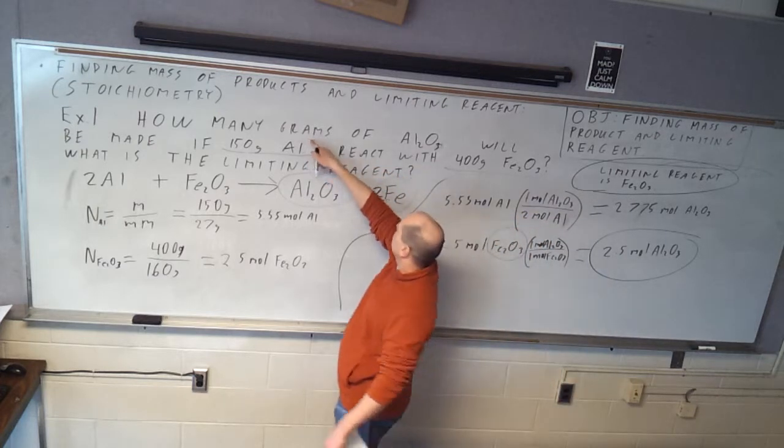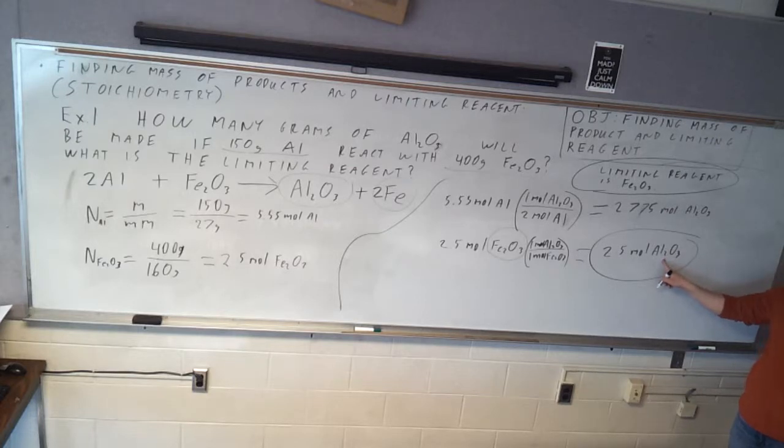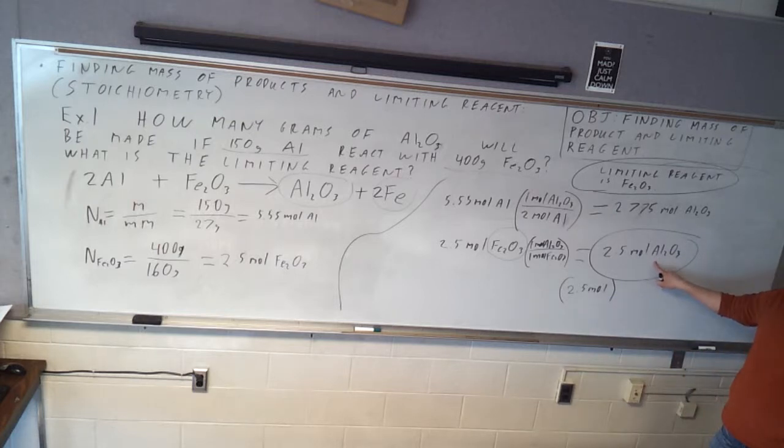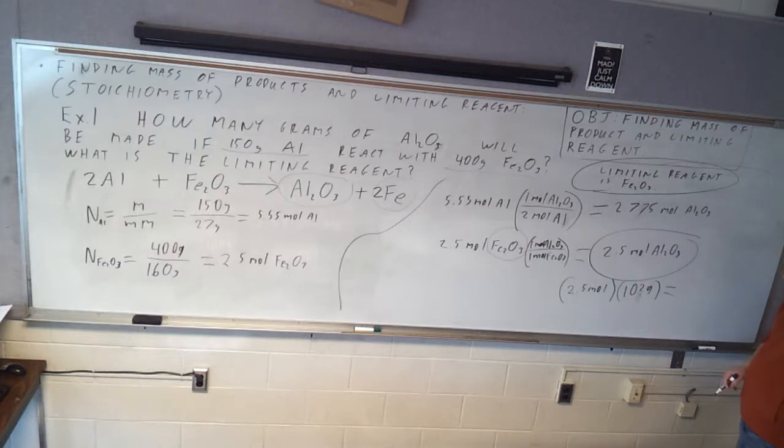The other thing I asked you is how many grams of aluminum oxide will be made. So we've got to take this number, the smaller one, and figure out how many grams. So all we do is number of moles times molar mass. That's 2.5 moles times molar mass of Al2O3. 2 times 27 is 54, and 3 times 16 is 48. That's going to be 102 is the molar mass of aluminum oxide. So 2.5 times 102: 255 grams of aluminum oxide was produced in this reaction.